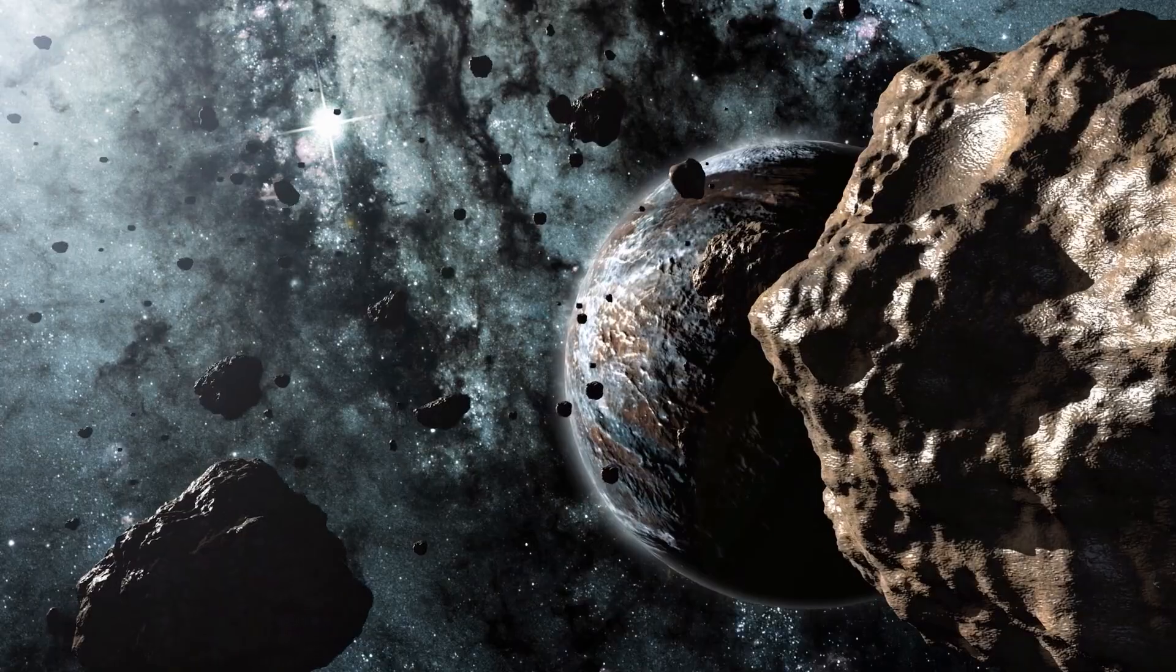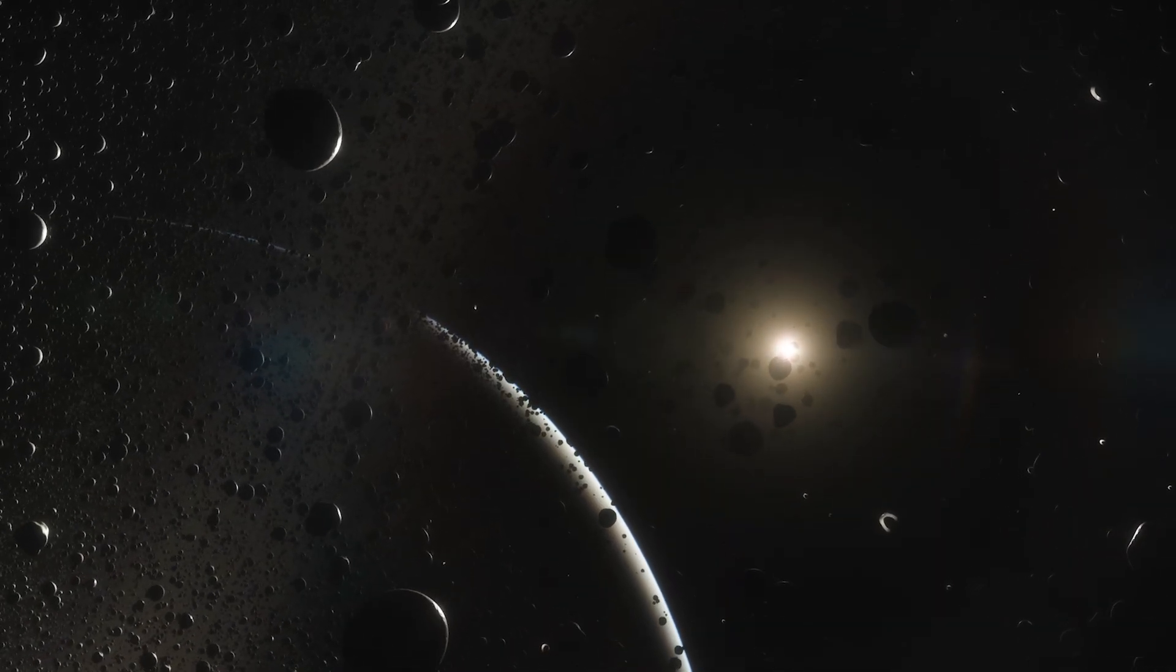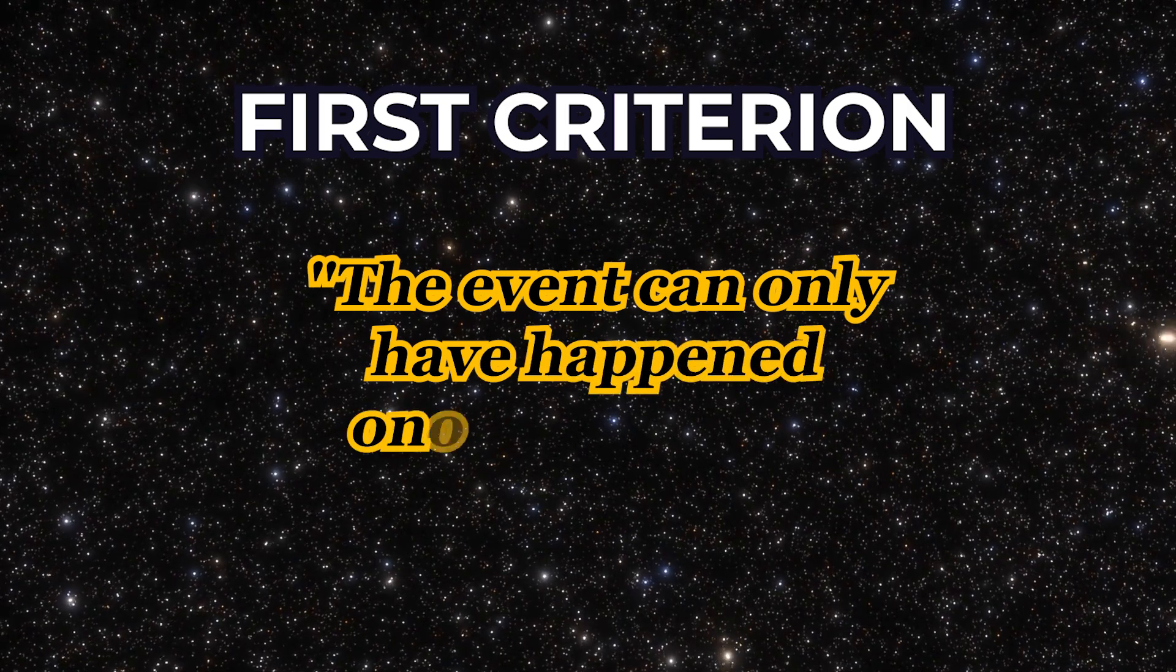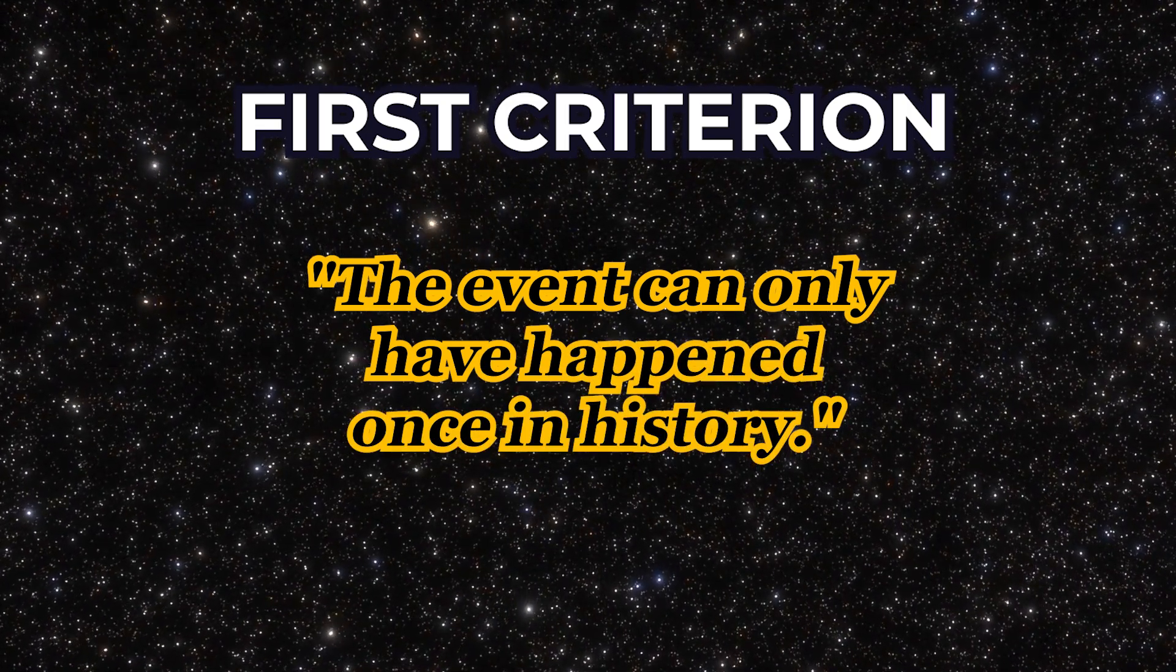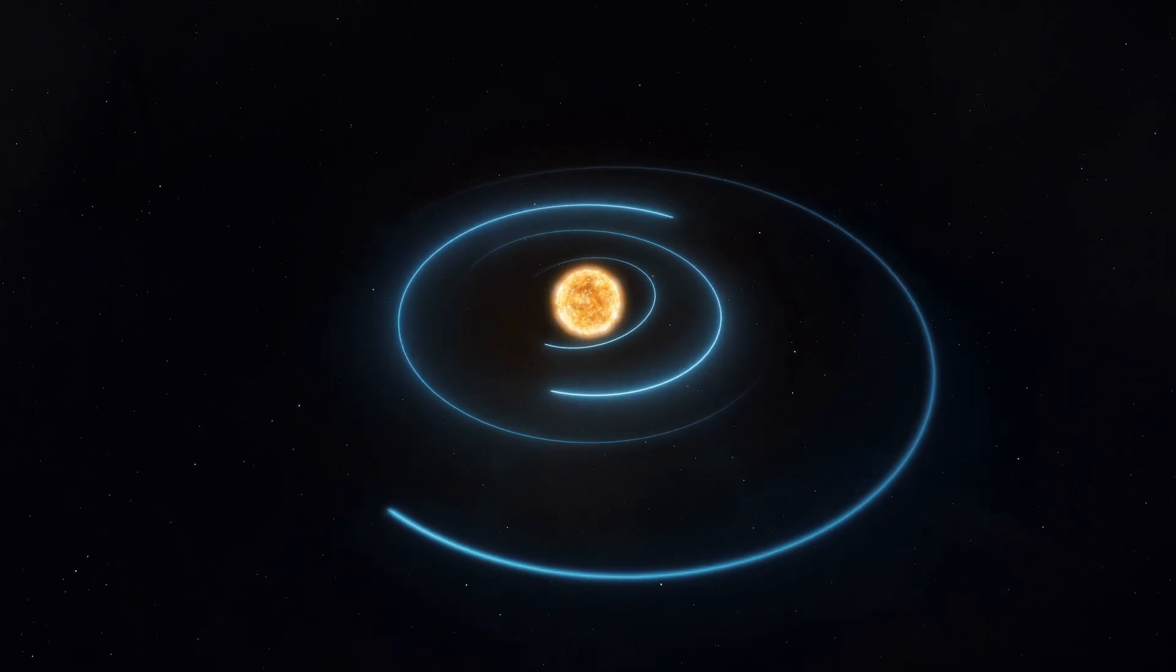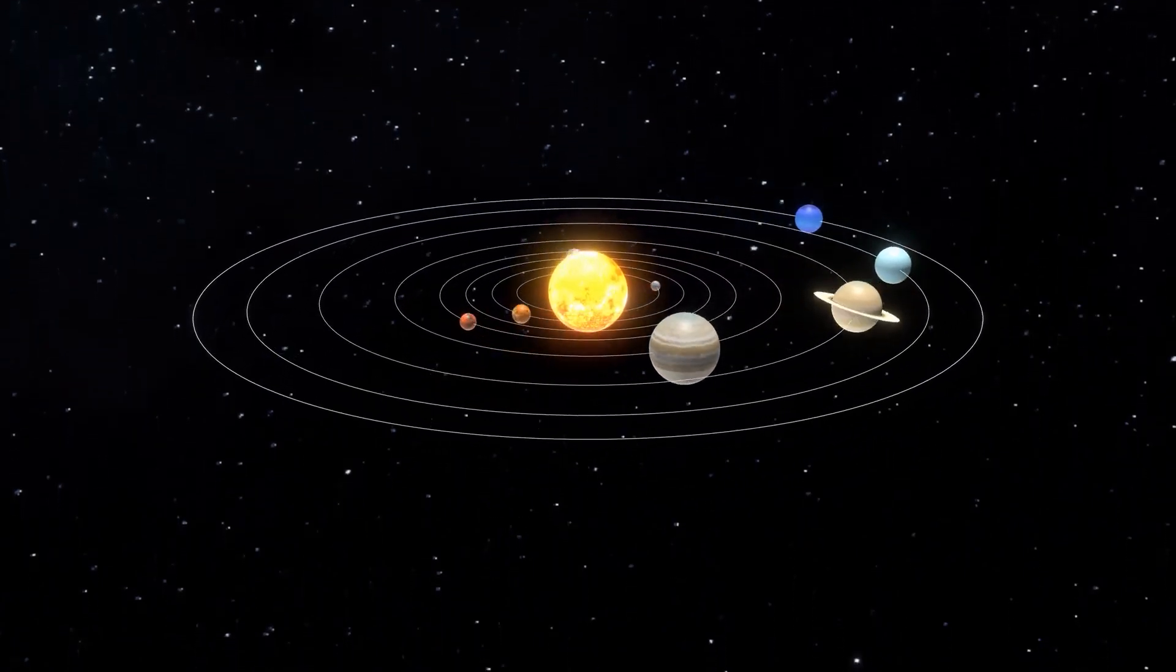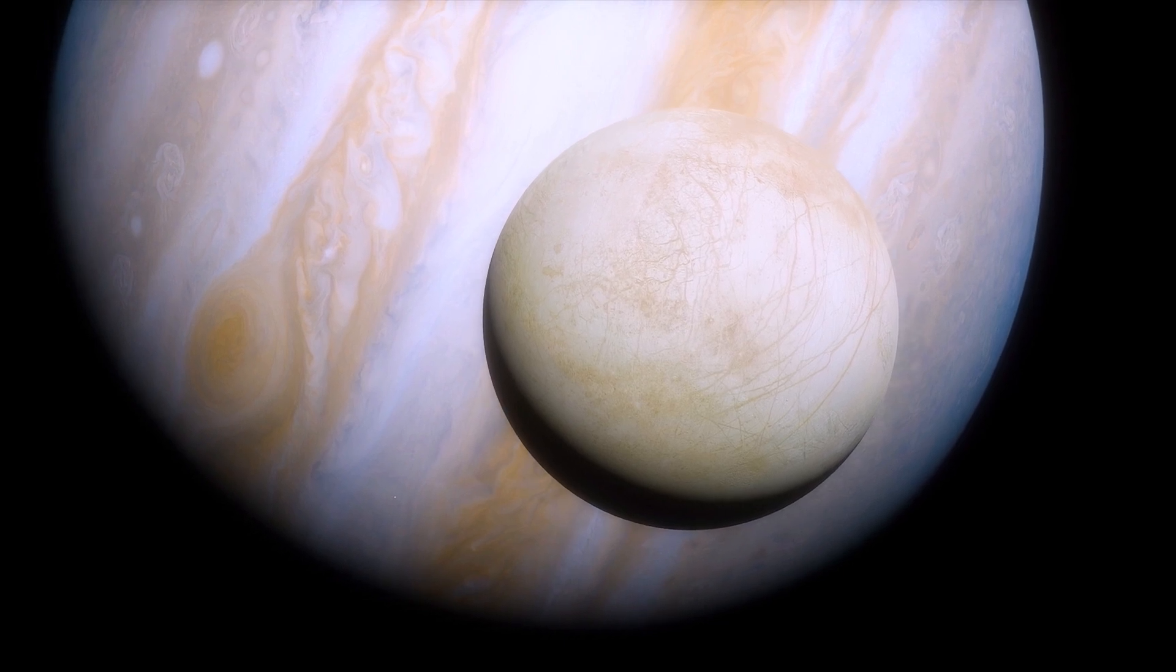First, let's imagine that one day we discover fossils of simple life, prokaryotic microorganisms, somewhere else in the solar system. This news would not be good. To understand why, remember the criteria for the Great Filter. The event can only happen once, and even with favorable conditions, it should take a long time to occur. Discovering that life emerged two or more times just in our solar system would indicate that the emergence of life might not be a good candidate for the Great Filter. Who knows? It might arise anywhere that has the right conditions, whether in a frozen ocean on one of Jupiter's moons or on ancient Mars.